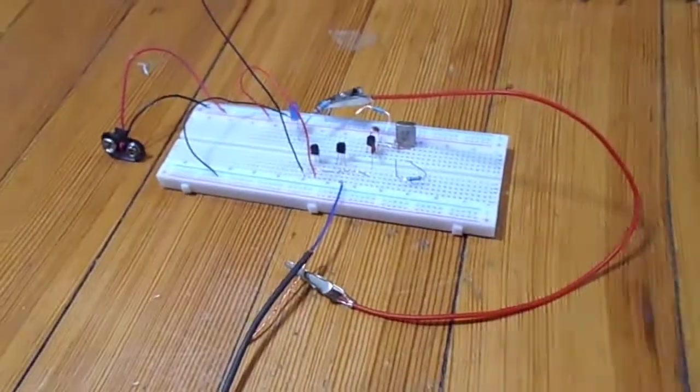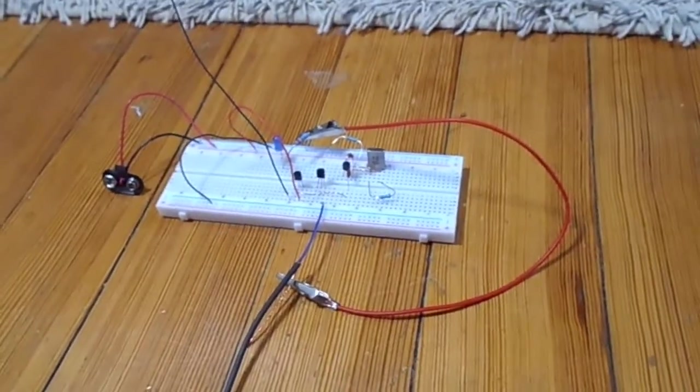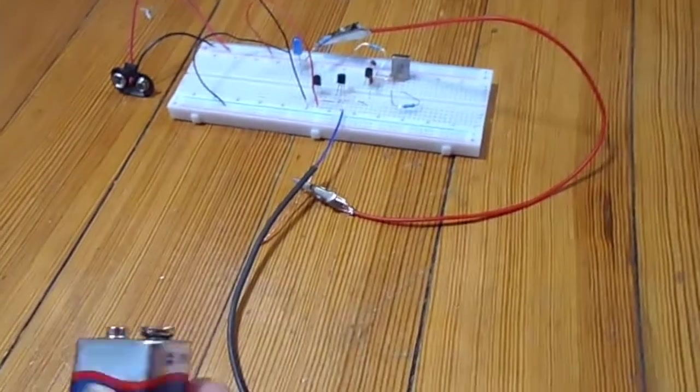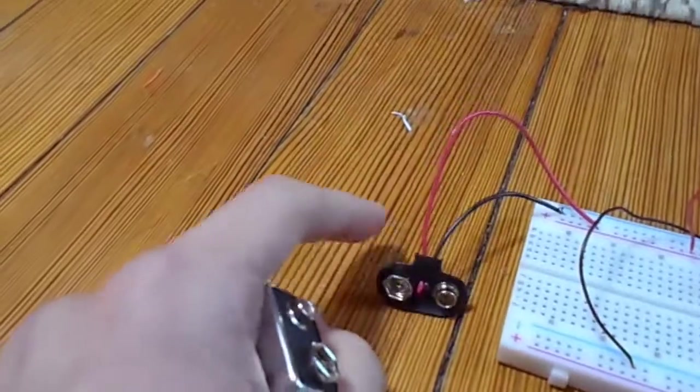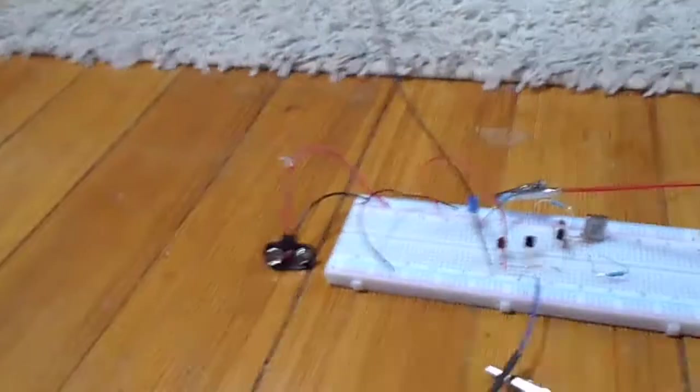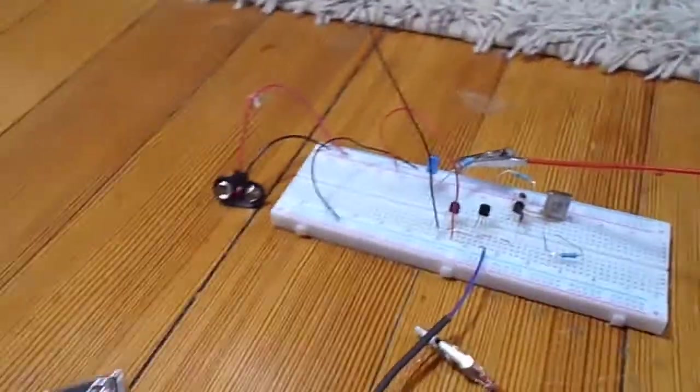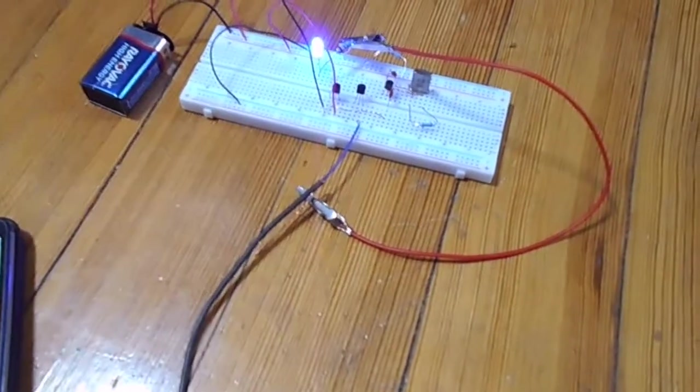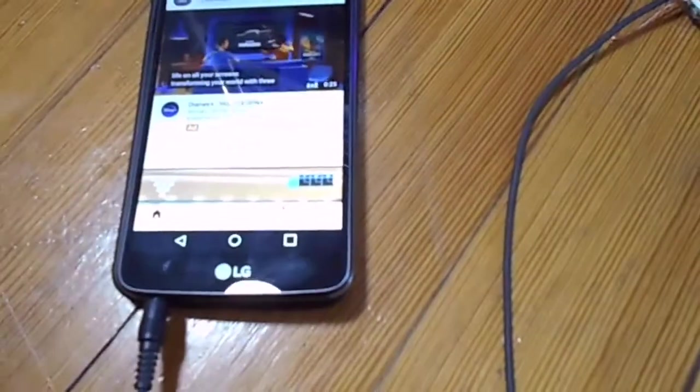So I'll get that hooked up and then I'm going to be powering it off a 9 volt battery. Now the Colpitts oscillator you can power between 5 and 12 volts. I just have a 9 volt because I have this little 9 volt connector there that easily goes into my breadboard. So let's connect that up.